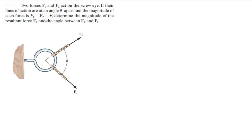Alright guys, we're going to do this problem that says two forces F1 and F2 act on a screw. Their lines of action are at angle theta apart. The magnitude of each force F1 equals F2 which equals F. Determine the magnitude of the resultant force and the angle between FR, F1, and F2.